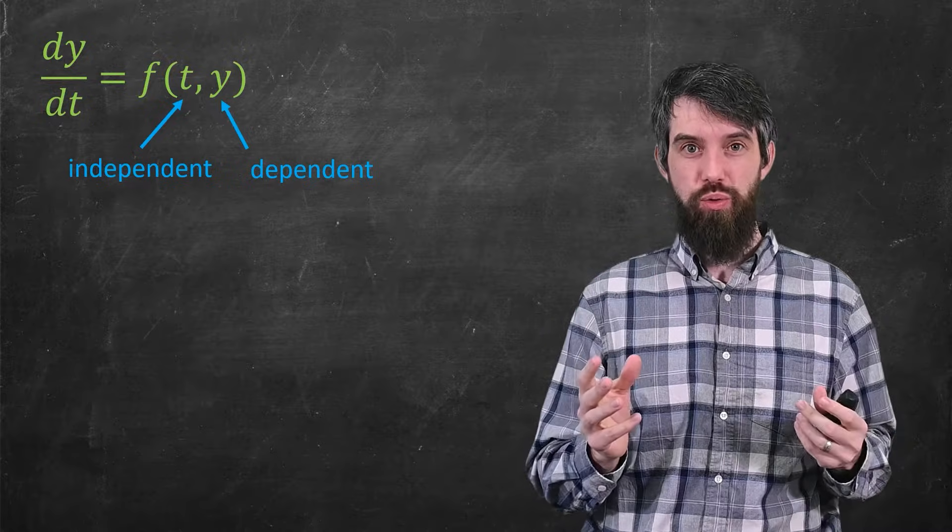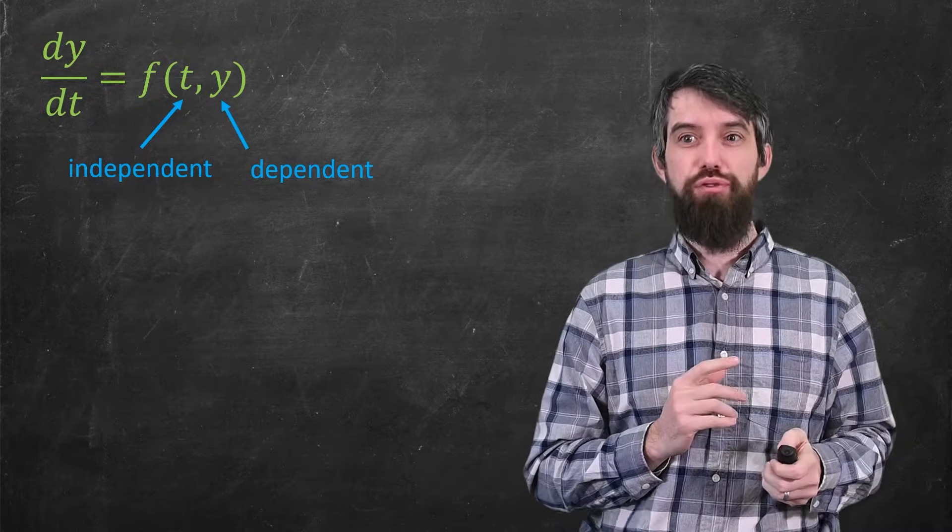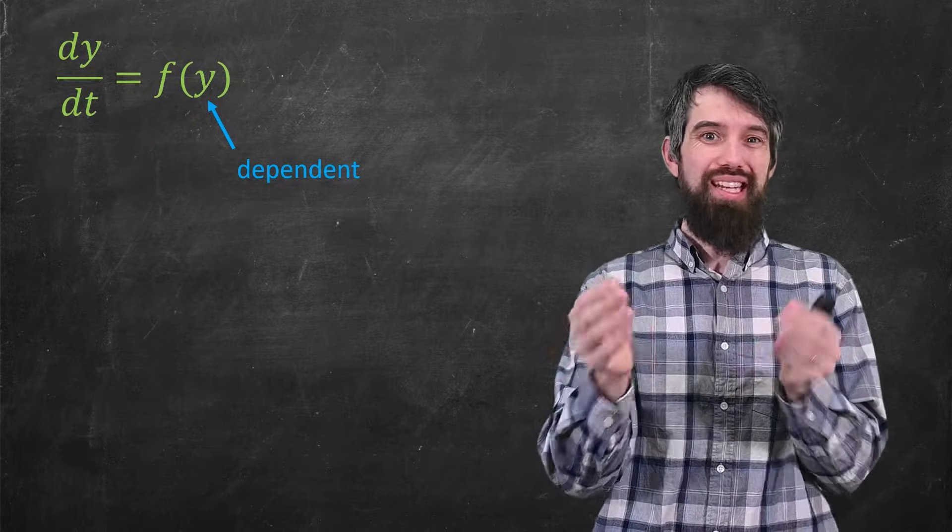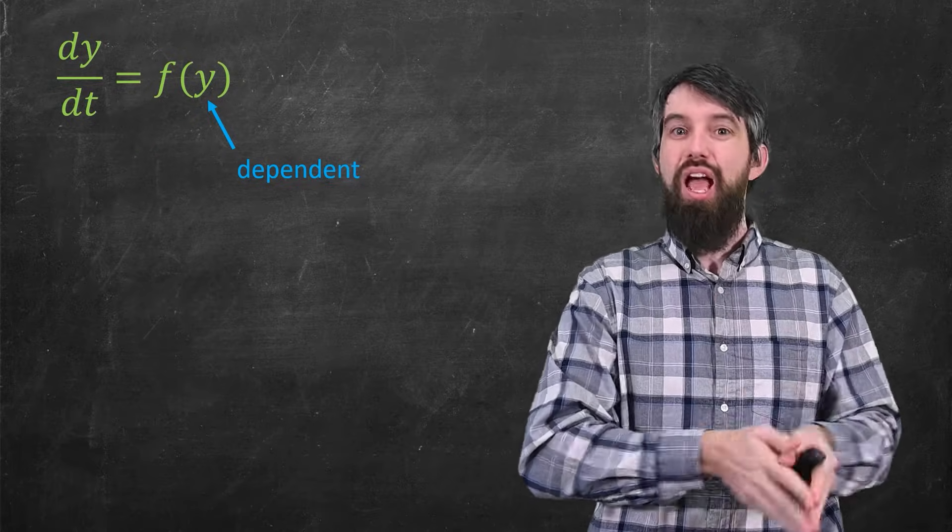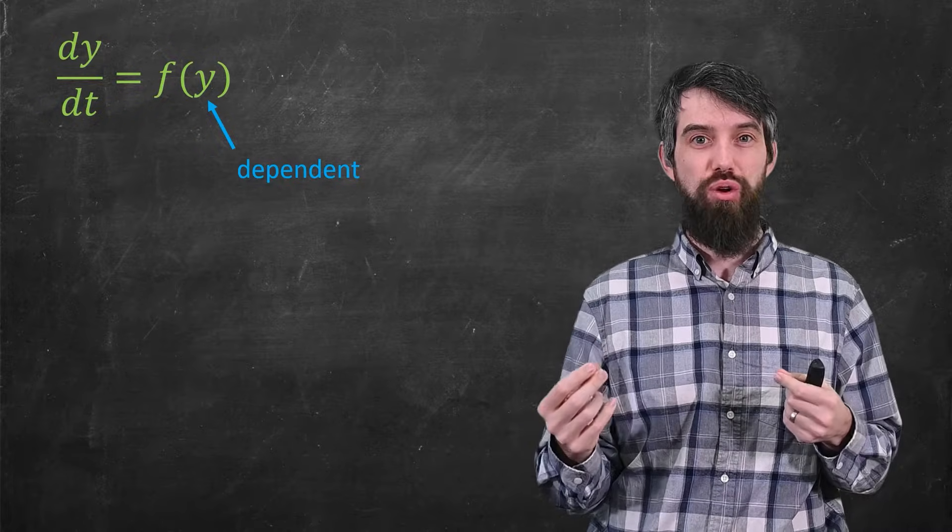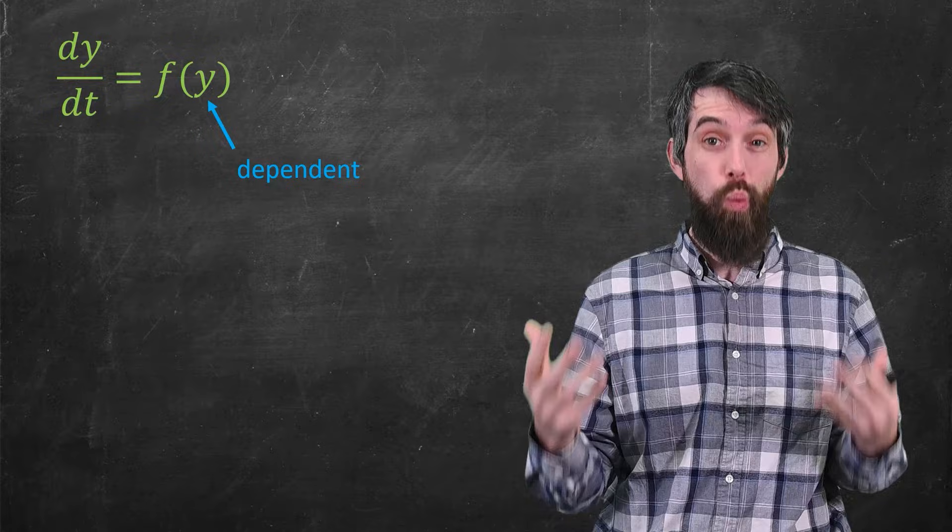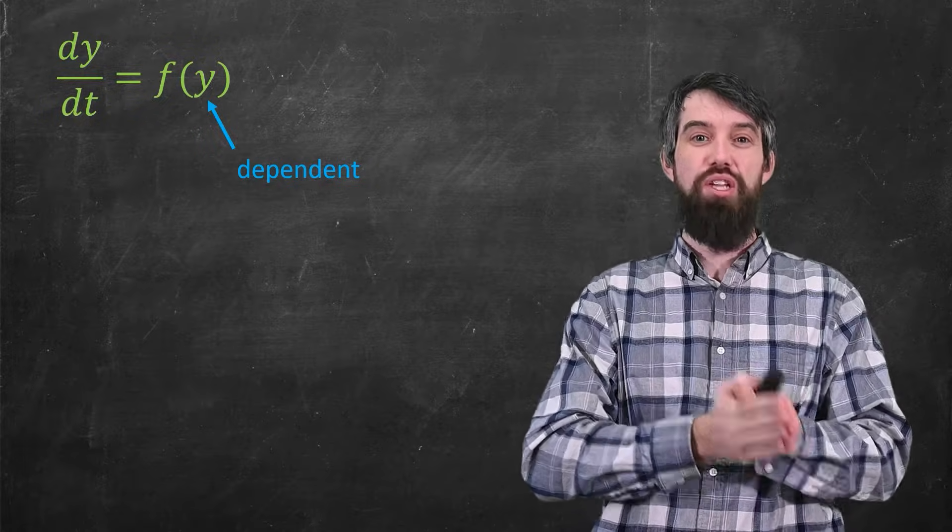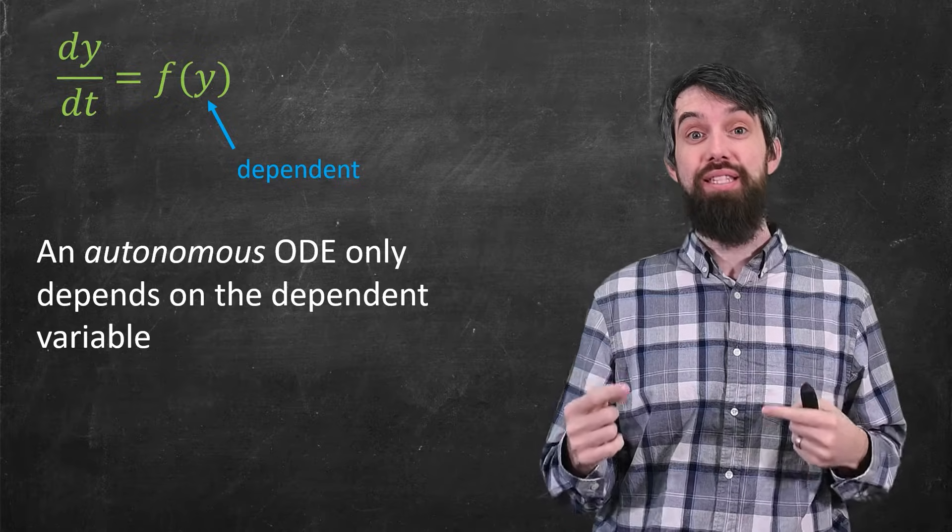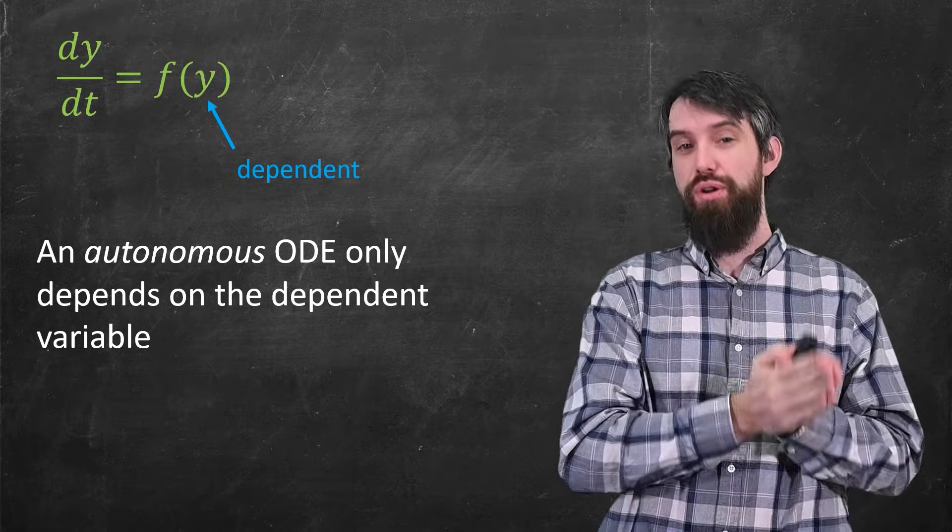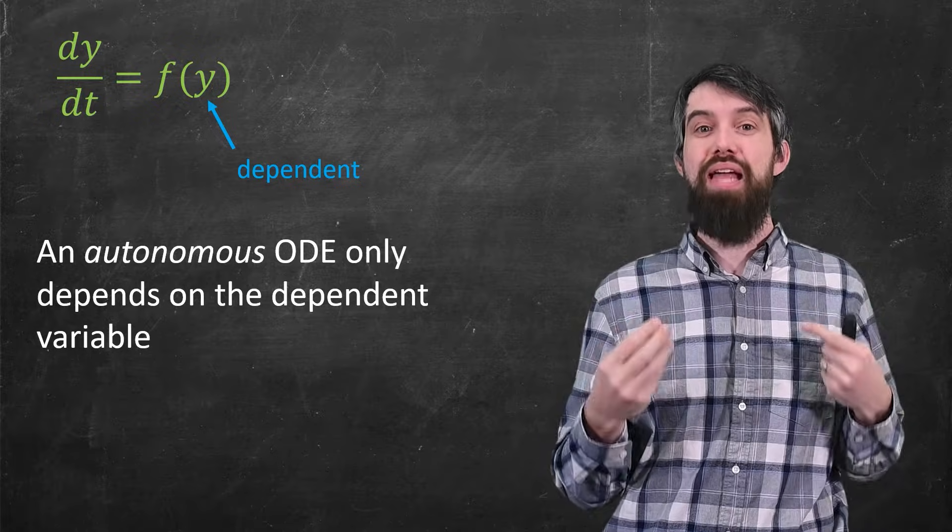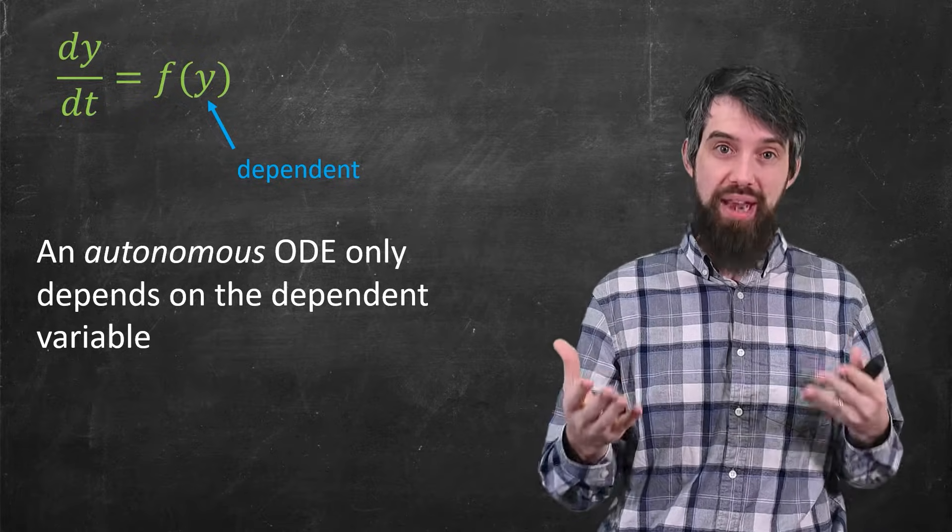So what makes it autonomous? Well, an autonomous differential equation is one where the t just doesn't appear. I mean, it's still a derivative with respect to t, and y still depends on t, but the explicit definition of the differential equation, it only depends on y. It's a derivative of y is equal to just some expression in terms of y. So our definition is that an autonomous ordinary differential equation is one where the derivative only depends explicitly on the dependent variable y.